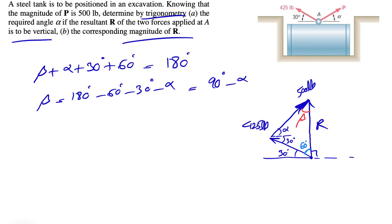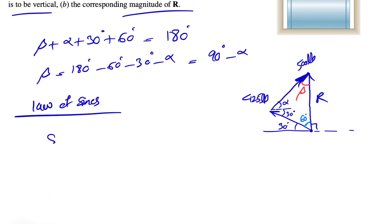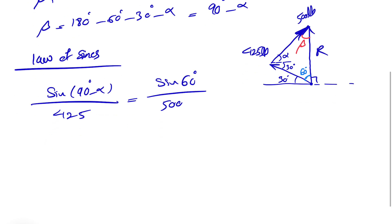So now we should be good to go. If we use the law of sines, we will have sine of beta, which we found is 90 minus alpha, over 425 is equal to sine of 60 degrees over 500 pounds.